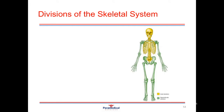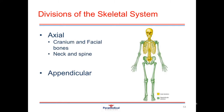There are two divisions of the skeletal system. The first is the axial skeleton, colored in yellow on the diagram, and the next is the appendicular skeleton, which is colored in green. The axial skeleton consists of the cranium and the facial bones, the neck and the spine, the thoracic cavity and the base of the pelvis. The appendicular skeleton consists of the upper and the lower limbs and the girdles that connect them into the trunk.